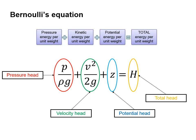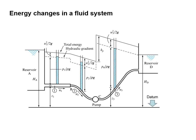Bernoulli's equation is simply: the pressure energy per unit weight (pressure head), plus the kinetic energy per unit weight (velocity head), plus the potential energy per unit weight (potential head), equals the total head or total energy per unit weight. The figure shows the energy changes in a fluid system. The solid line at the bottom is the datum, and at position one we have the potential head z1, then the pressure head p1/ρg, and the velocity head v1²/2g. This varies through the system as shown by the total energy line and the hydraulic gradient line.